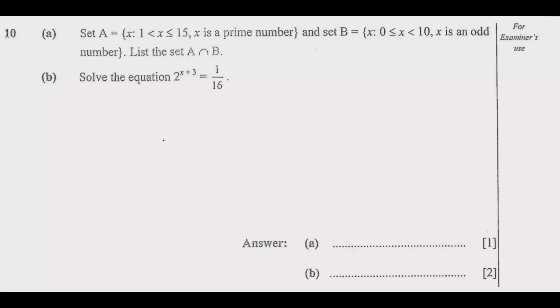Question 10(a) reads: Set A equals {x: 1 < x ≤ 15, x is a prime number}. Then set B equals {x: 0 ≤ x < 10, x is an odd number}. List the set A intersect B. So the question requires us to list the members of set A intersect B.